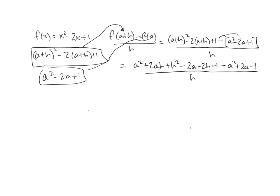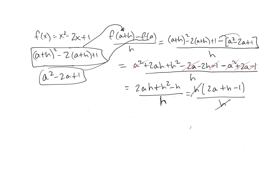Now clean it up. The a² terms cancel. The -2a and +2a cancel. The +1 and -1 cancel. You're left with 2ah + h² - 2h all over h. Everything has an h in common, so factor that out and reduce. The final answer is 2a + h - 2.